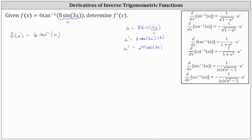And therefore the derivative of six times inverse tangent u is equal to six times one divided by the quantity one plus u squared, which is one plus the square of eight sine three x, and then times u prime, where u prime is 24 times the cosine of three x.